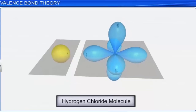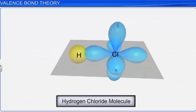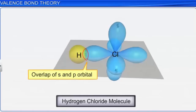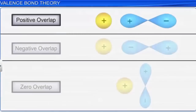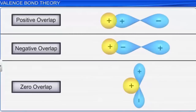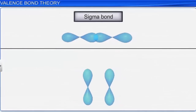Another example is the formation of a hydrogen chloride molecule. When a hydrogen atom approaches a chlorine atom, a bond is formed due to the overlapping of S and P orbitals. The overlap can be positive, negative, or zero depending on the properties of the respective overlapping orbitals. Based on the overlapping of orbitals, two types of covalent bonds are formed: sigma and pi bonds.